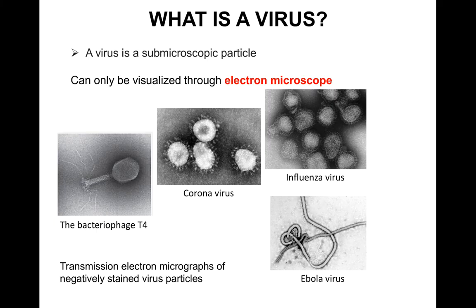What is a virus and how does it look? First, a virus is a sub-microscopic particle. We have discussed different kinds of microscopes, and the most basic is the light microscope — you cannot visualize viruses using a regular light microscope. That's why viruses are called sub-microscopic particles and can only be visualized through electron microscopy. Here are some electron micrographs — transmission electron micrographs of negatively stained virus particles.